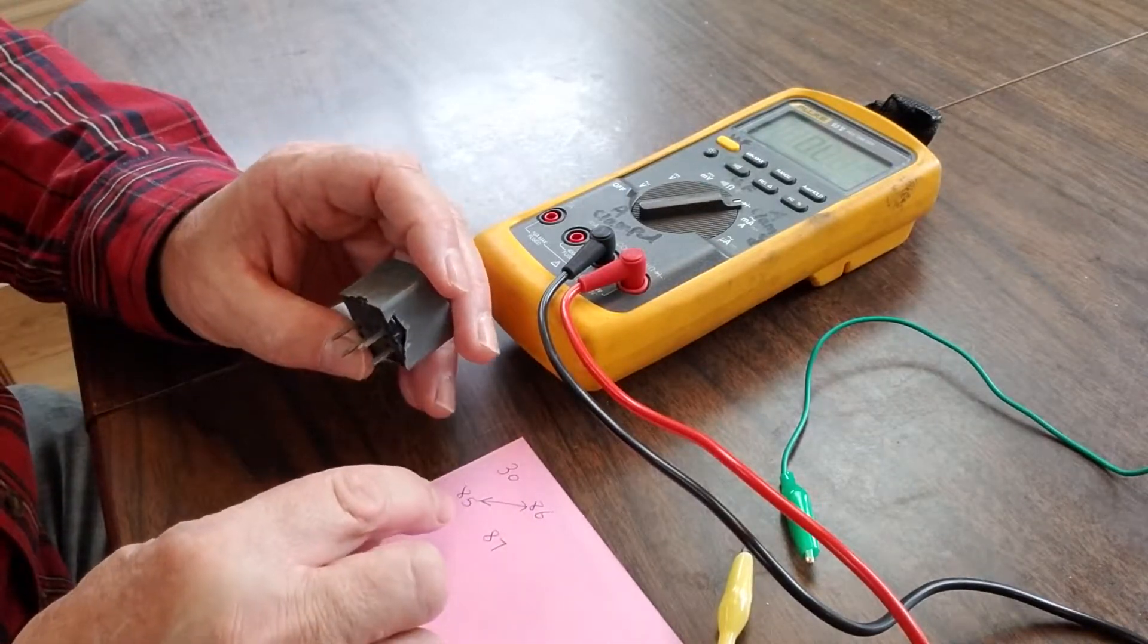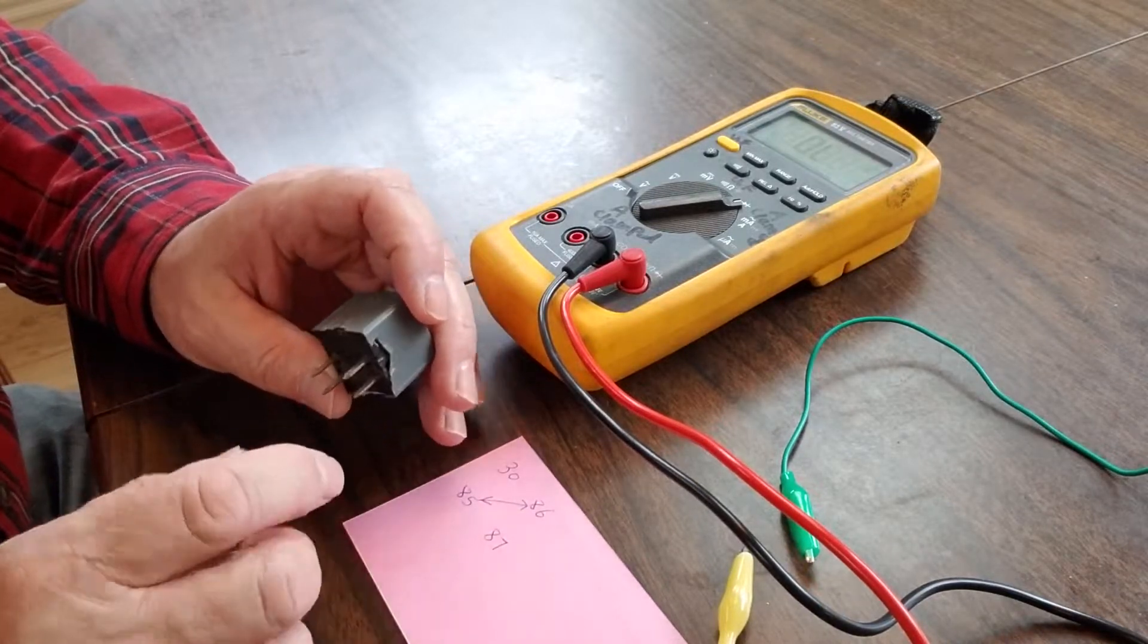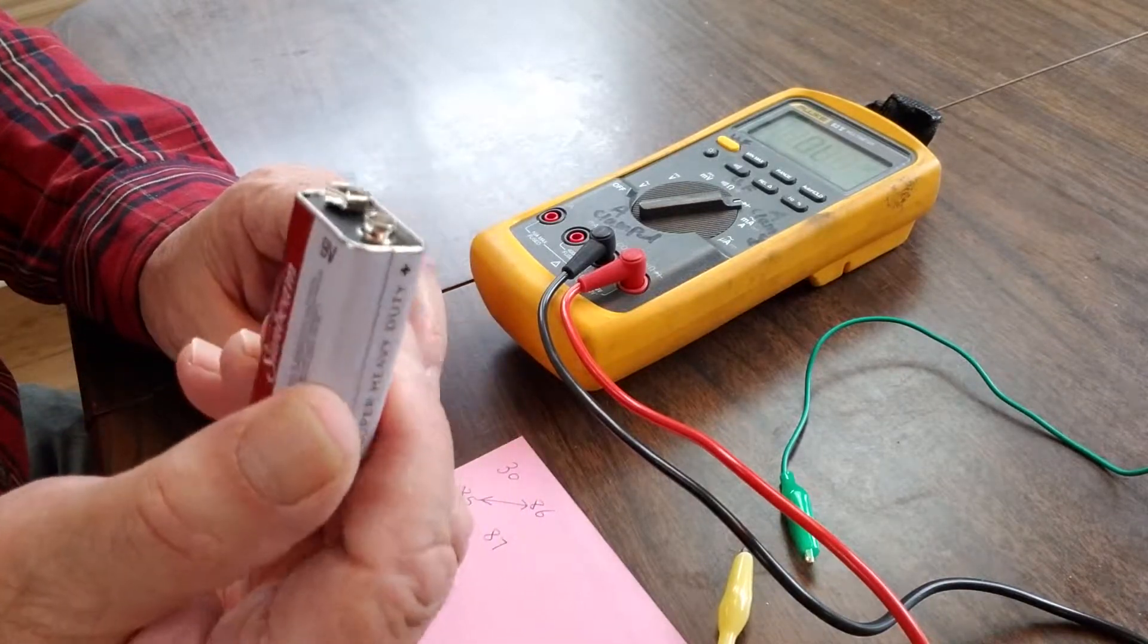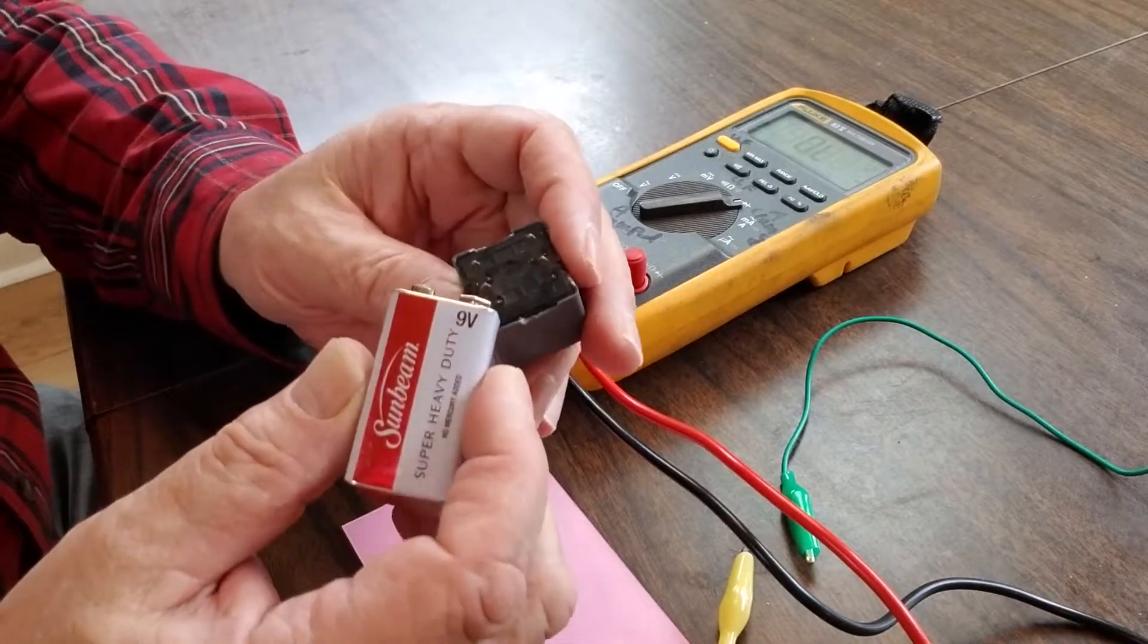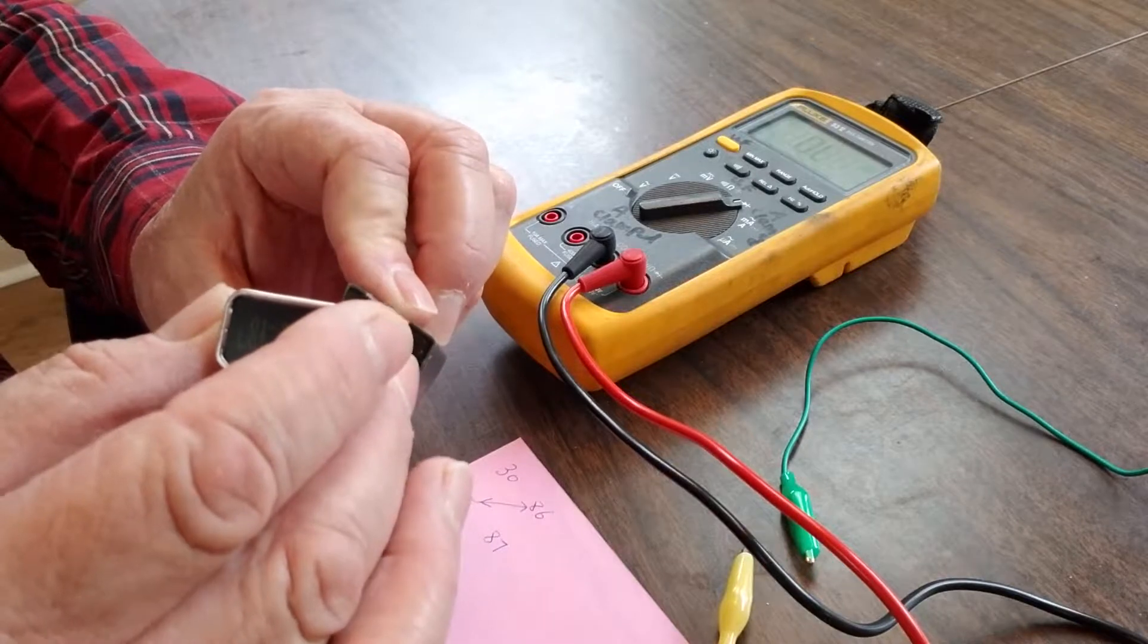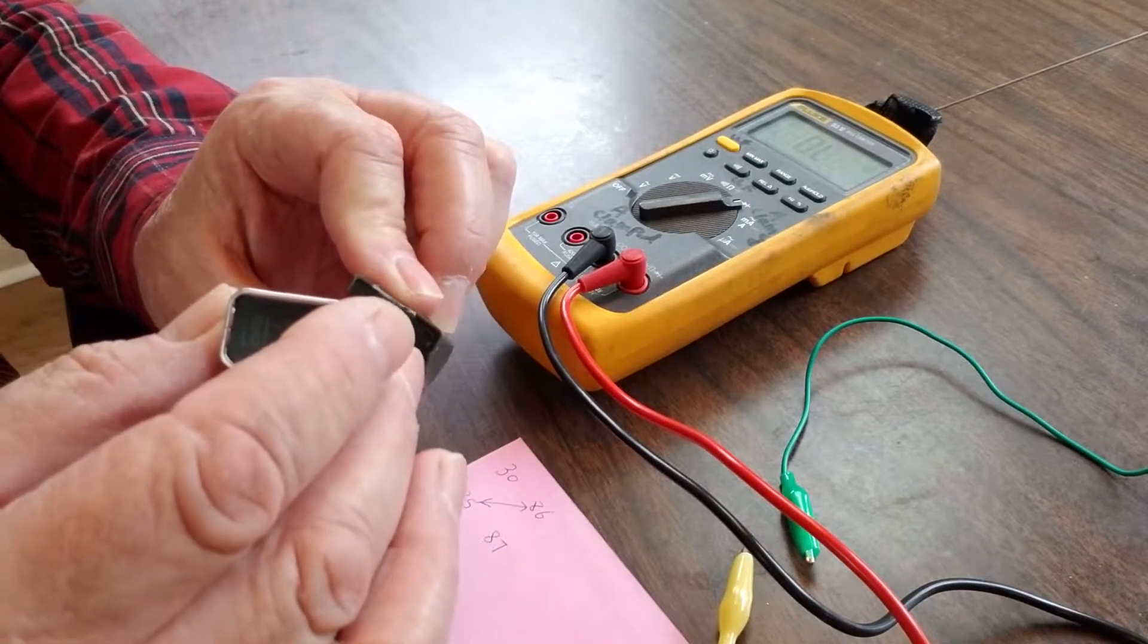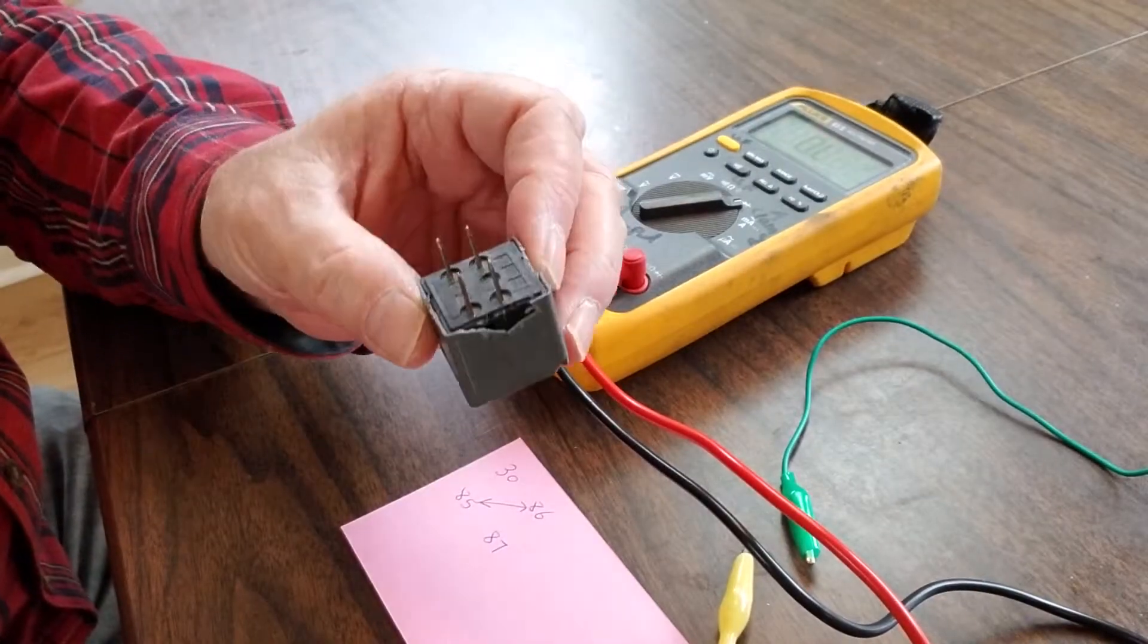All you have to do is get a 9-volt battery and hook it up to pins 85 and 86. When you hook it up to 85 and 86, you can see if it's functioning. This one seems okay because it's working.